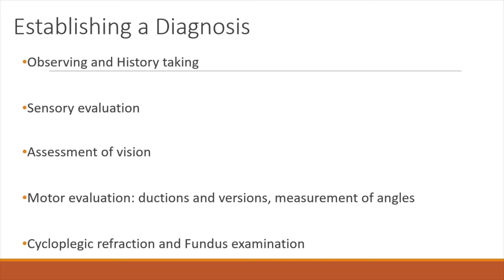Stereoacuity for distance and near should ideally be done separately. Assessment of vision is important because you want to know that the squint is freely alternating before you plan any surgical correction. Motor evaluation: you do versions first, and if there is some limitation of movement, you occlude one eye and go in for ductions — especially in infantile esotropias, because you may have pseudo-limitation of abduction in those babies.